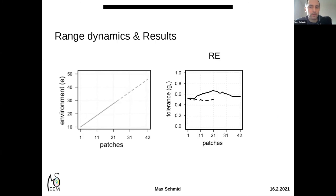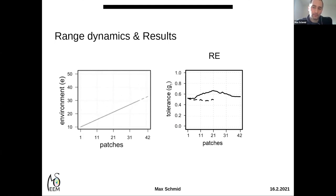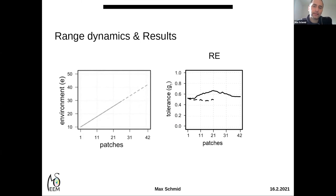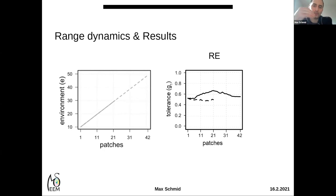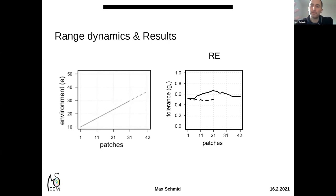In this scenario, the highest tolerance evolved in the middle of the range, while at the range edges tolerance levels stayed the same. This is interesting because even though we had the highest rates of change in patch 42, that patch was only recently colonized by genotypes that could follow their optimal conditions through space. In the middle of the range, there was the most favorable combination of long history of environmental change and moderate rates of change.